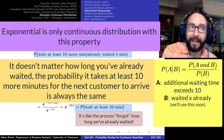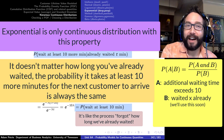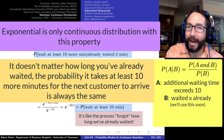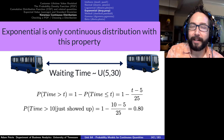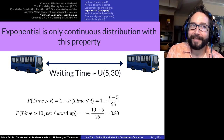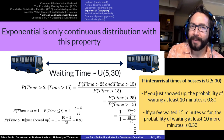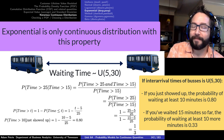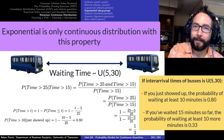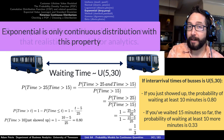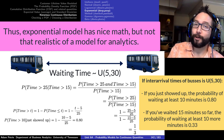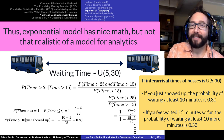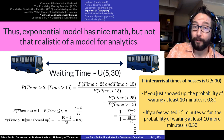The exponential is the only continuous distribution with this memoryless property, which shows why it's not always the most realistic model for things like bus wait times — if you've already waited 15 minutes, the bus really is due soon. The memoryless property says the probability of waiting an additional five minutes is the same regardless. People use the exponential anyway in queuing theory and manufacturing because the math is so nice, but we can definitely do better as a probabilistic model.